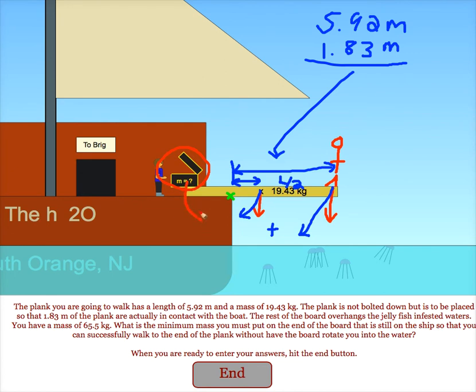That must equal the torque caused by this box. So we then say torque equals radius times force. Our total clockwise torque goes in here. The radius would be how much of the board is actually on the ship. That would be the distance from the pivot point to where we have this box.